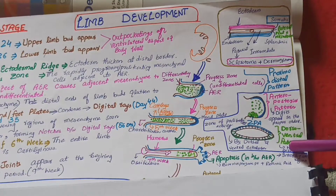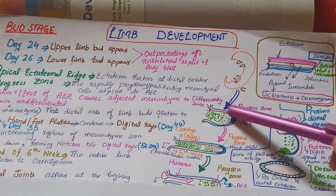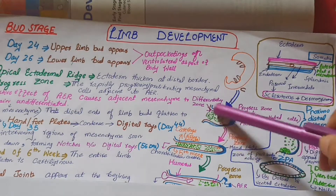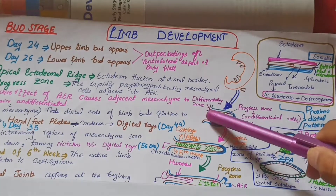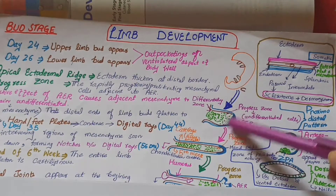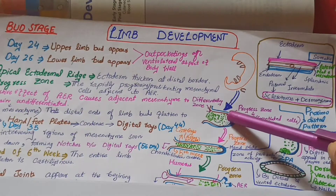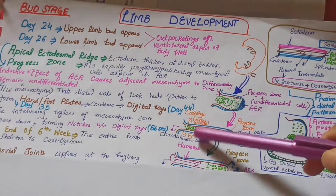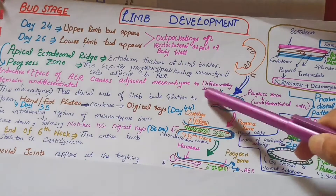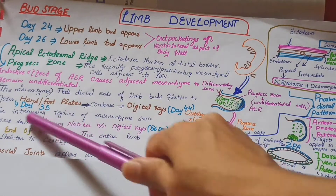In the proximal-distal type of development, there is the AER and progress zone. Mesenchymal cells proximally are differentiating — this is called the differentiating zone. Distally located cells adjacent to the AER remain undifferentiated and have the ability to differentiate into any type of structure. The proximally located cells have differentiated into cartilage, as they will form bone by endochondral ossification. The distal ends of the limb buds then flatten to form the hand or foot plates.